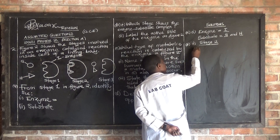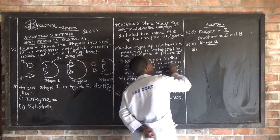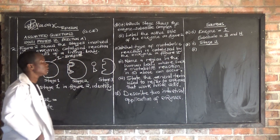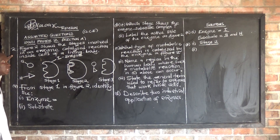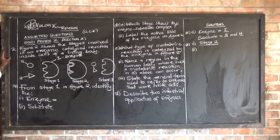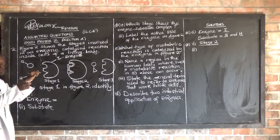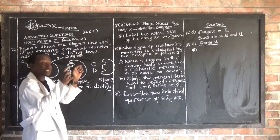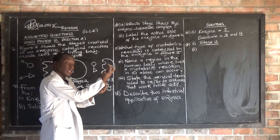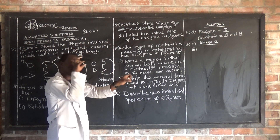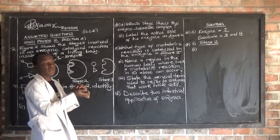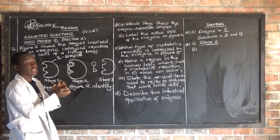Let us look at question B, Roman numeral 2: label the active site of an enzyme. What is the active site? An active site is a site in an enzyme where the substrate is fitted in — where the substrate binds. To give an example, if this is our enzyme, the active site is the region where the substrate is going to fit in.